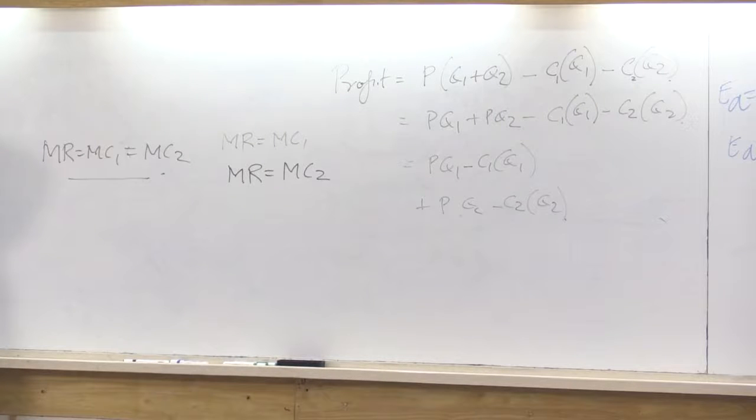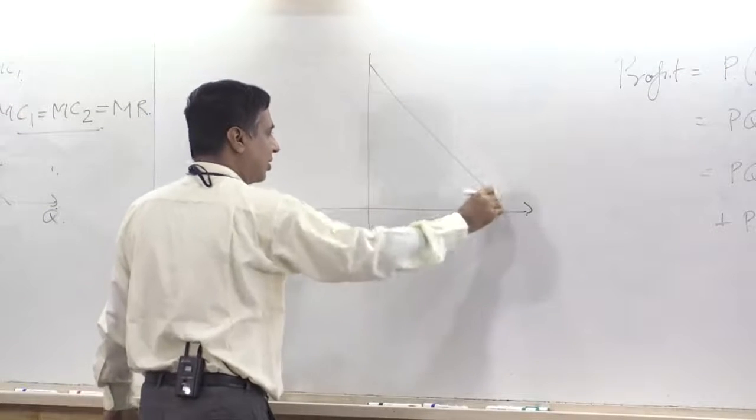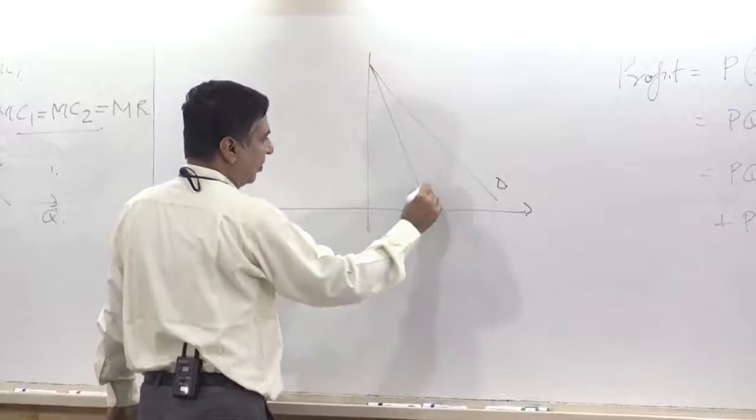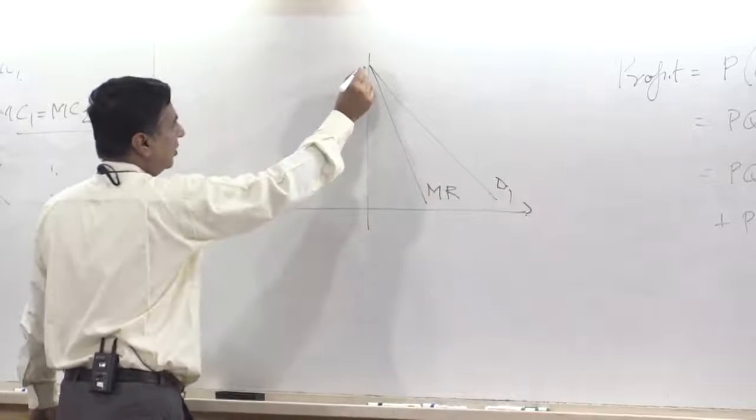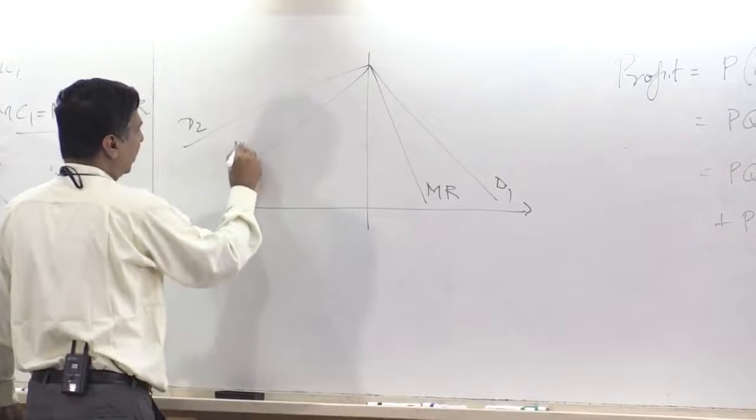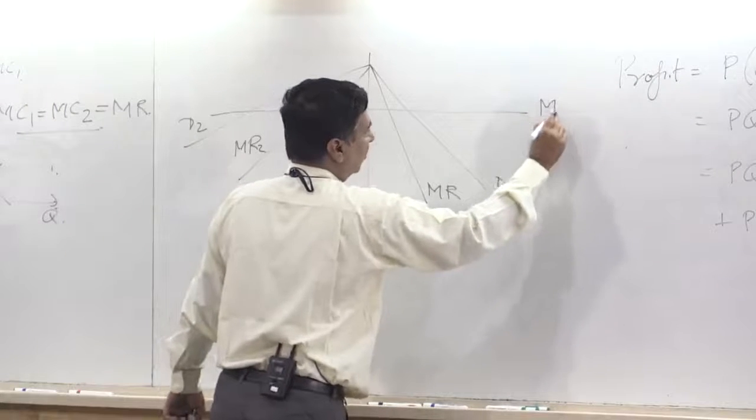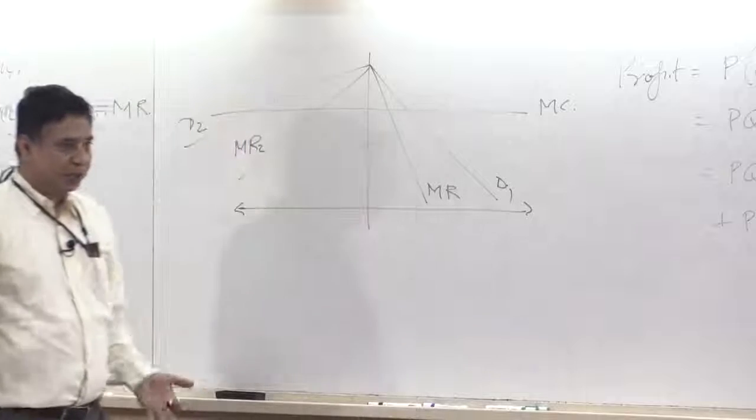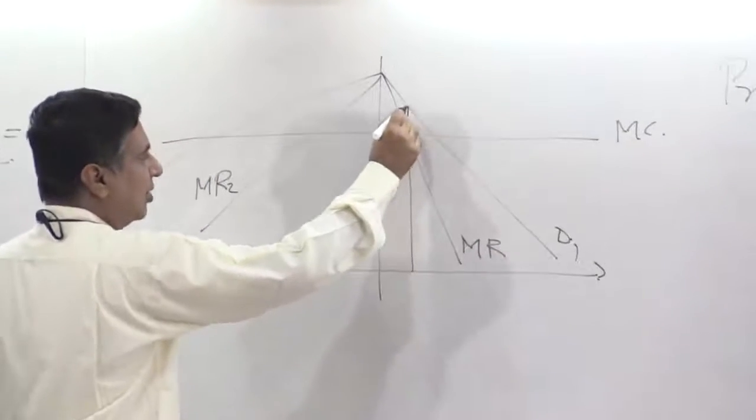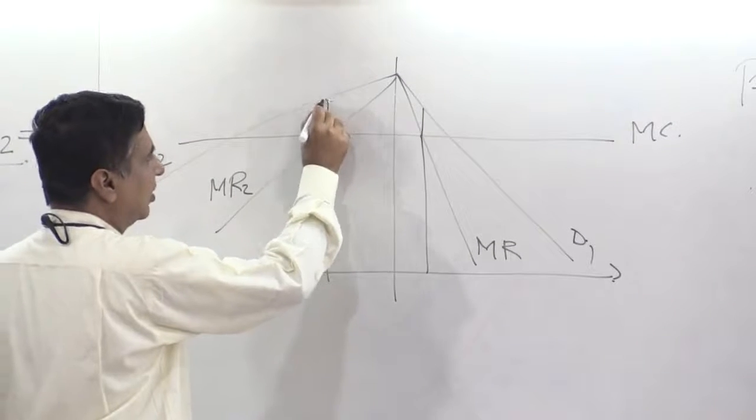I can draw the diagram. It is very much like this one. So here is a demand curve, and suppose MRD1, MR1, and this is D2, MR2. And suppose there is one marginal cost, since you are producing in one factory. So you would set marginal revenue equal to marginal cost here and you would set marginal revenue equal to marginal cost here.